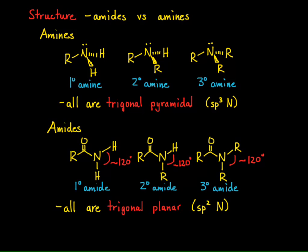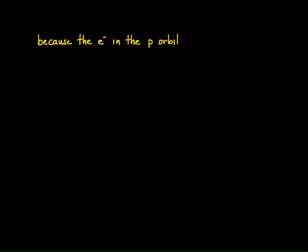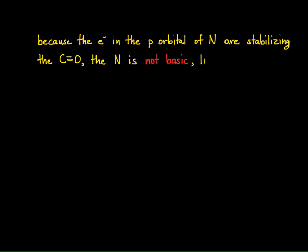This also has great consequences in terms of reactivity, especially the basicity of amides versus amines. Amines are fairly basic. But because the electrons in the p orbital of nitrogen in an amide are helping to stabilize the carbonyl, that nitrogen is not basic. The electrons are not willing to be donated to act as a base like amines are. Amines are very basic; amides are not basic at all. That's important to understand in terms of reactivity of amides, and we're going to see how this plays out with all of the acyl compounds.